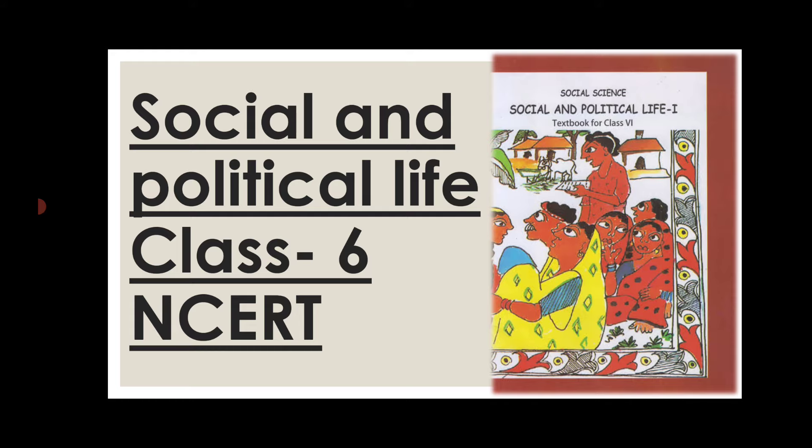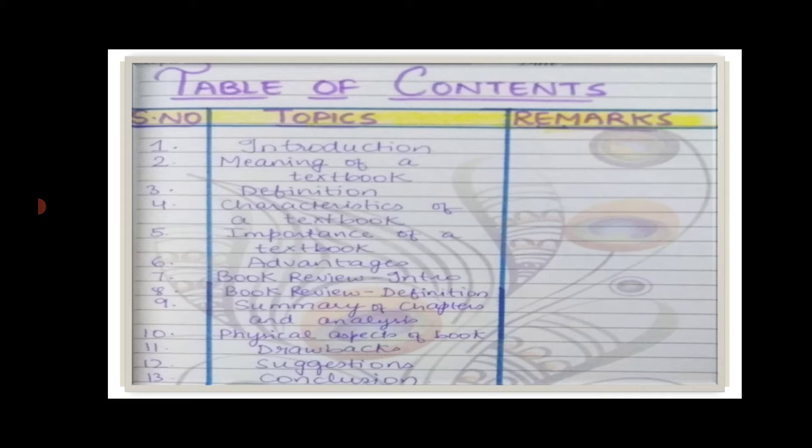I have reviewed the book Social and Political Life of Class 6th NCERT. First of all, you have to make an index at the beginning of the file. In the index you can include topics like introduction, meaning of a textbook, definition, characteristics of a textbook, importance of a textbook, advantages, book review introduction, book review definition, and summary of chapters and analysis.